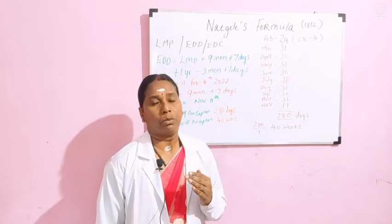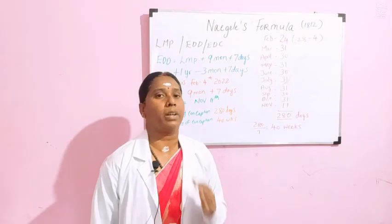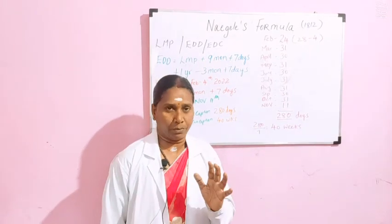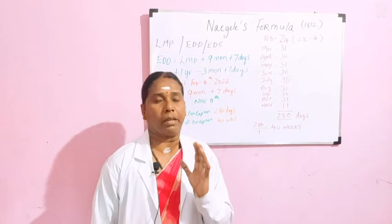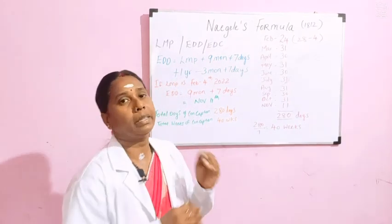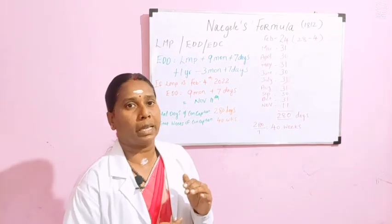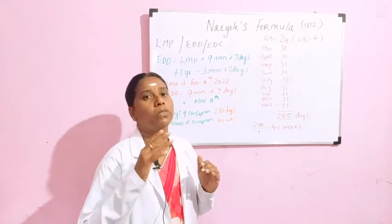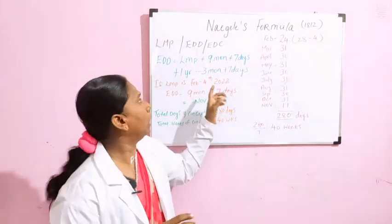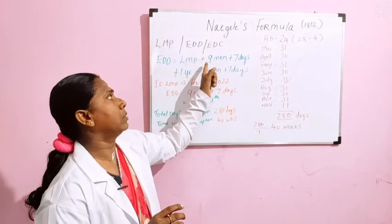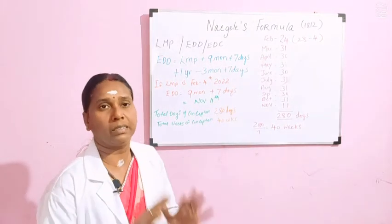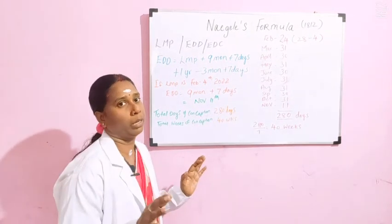Then we have the expected date of confinement, which is nothing but the expected date of delivery — when labor is going to begin exactly. You can use expected date of confinement and expected date of delivery interchangeably. According to Nagele's formula, LMP plus 9 months plus 7 days is used to calculate the EDD.